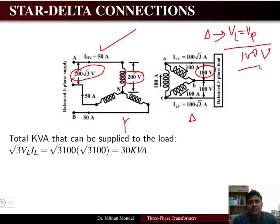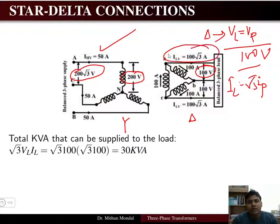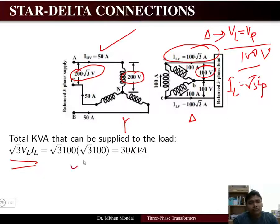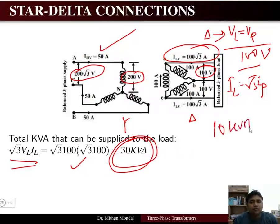In the delta-connected secondary, the line current equals √3 times the phase current, so the line current becomes 100√3 A. The three-phase kVA rating is √3 × V_L × I_L, which again gives 30 kVA — consistent with three 10 kVA single-phase units.